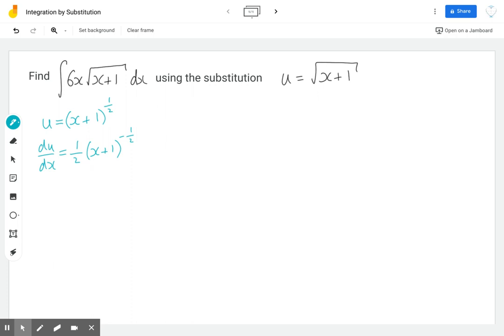Now we need to rearrange this to get dx equals. Now, it's not in a very nice format to immediately be able to see how to rearrange this. So I'm just going to rewrite it in another form just so it makes it easier for people to see how this works. So you've got one half times 1 over x plus 1 to the half, which is 1 over 2 x plus 1 to the half.